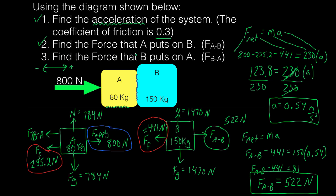Number three asks for the force that B puts on A. We could use Newton's second law on block A alone to solve for it. But Newton's third law tells us that for every action there's an equal but opposite reaction. So this 522 newtons that A is putting on B is returned as an equal but opposite force. Therefore, the force that B puts on A is negative 522 newtons. You could use Newton's second law to prove that, but by Newton's third law it follows directly.